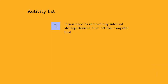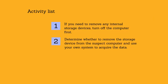If you need to remove any internal storage devices, turn off the computer first. However, before you turn off the computer, you should verify that all volatile data has been captured whenever possible. Determine whether to remove the storage device from the suspect computer and use your own system to acquire the data. It may not be possible to remove the storage device because of hardware considerations and incompatibilities. Typically, you would not disconnect storage devices such as RAID devices, storage devices with hardware dependency, or devices in network storage systems such as SAN.